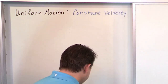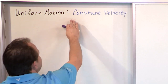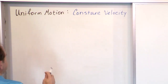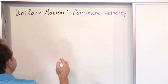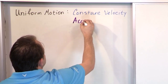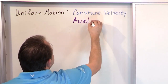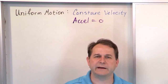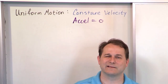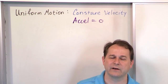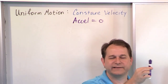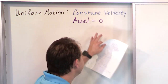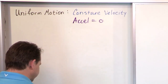It stands to reason that if it's going at constant velocity, another way you could define uniform motion is that the acceleration is equal to zero. Because acceleration means you're changing your velocity. So if it's a constant velocity, you're not accelerating at all — you're not speeding up, you're not slowing down. The acceleration is equal to zero.